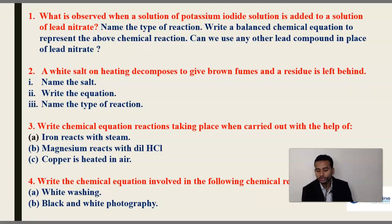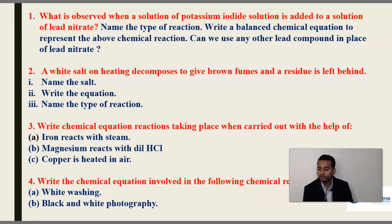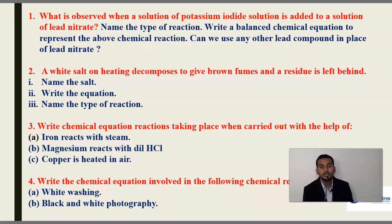The sub-questions are: Name the type of reaction — which type of reaction is carried out during this process? Write the balanced chemical equation to represent the above chemical reaction. Can we use any other lead compound in place of lead nitrate? Instead of lead nitrate, can we use some other compound also? That is what this problem is asking.